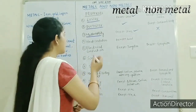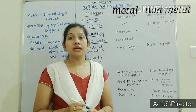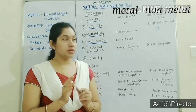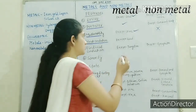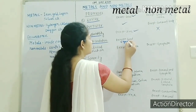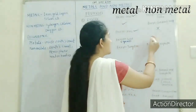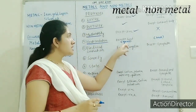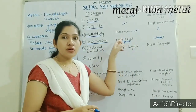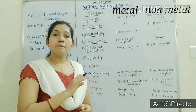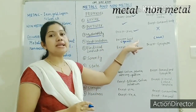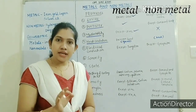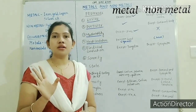Next is heat conduction — whether the substance has the capacity to carry heat from one place to another. Metals are good heat conductors and non-metals are bad heat conductors. Exception: lead is a metal which cannot conduct heat.